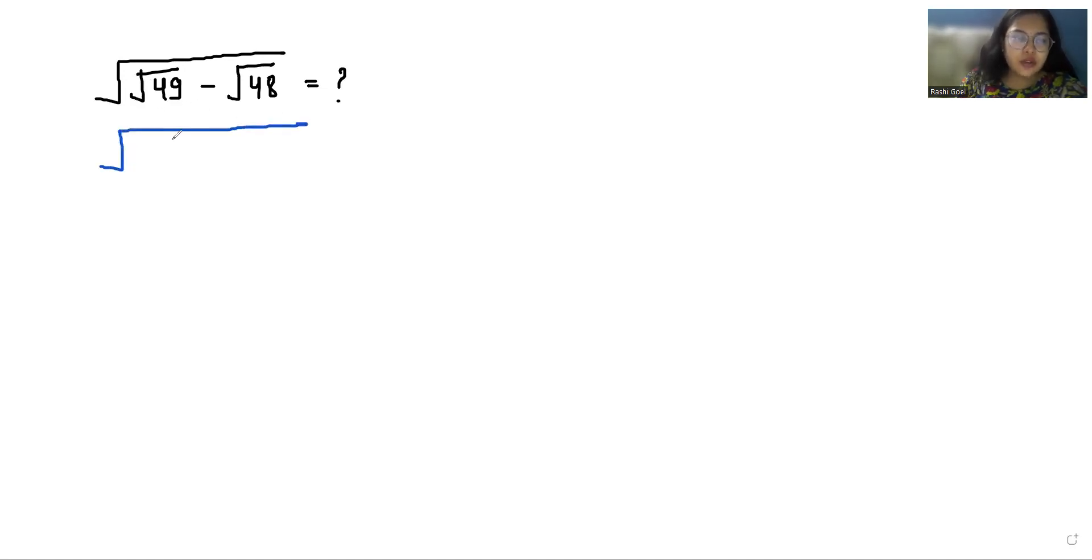Under square root, √49 is 7 minus √48. We will do prime factorization, so 2 times 24, 2 times 12, 2 times 6, 2 times 3, and 3 times 1. So if we make pairs...